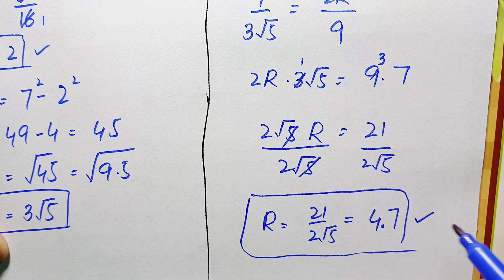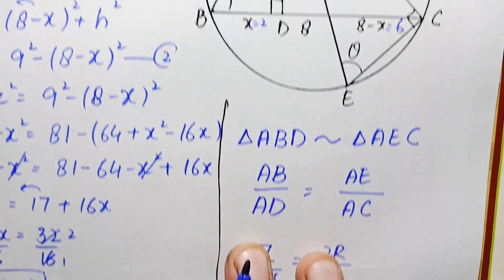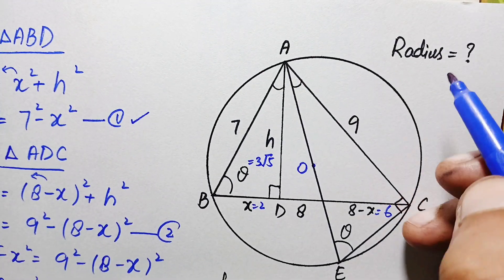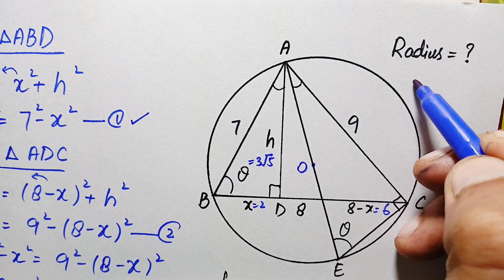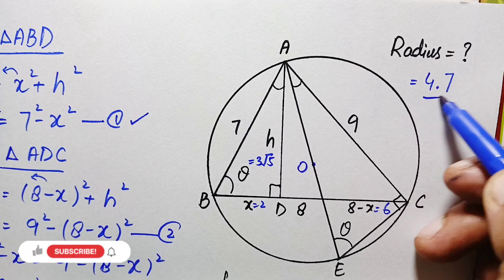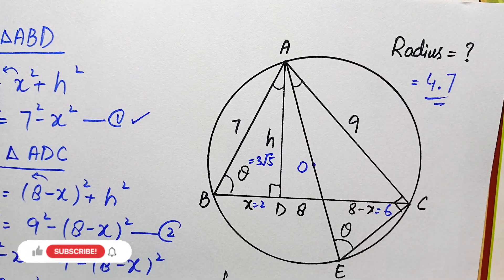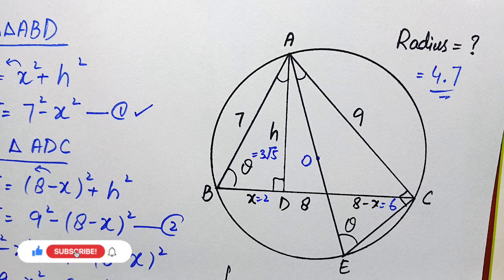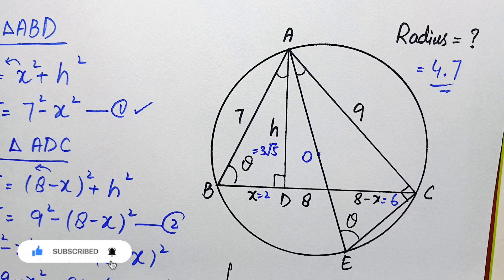So the radius of this circle is approximately 4.7 units, which is our required answer. Don't forget to subscribe to my channel for more interesting and beautiful geometry problems. Thanks for watching.